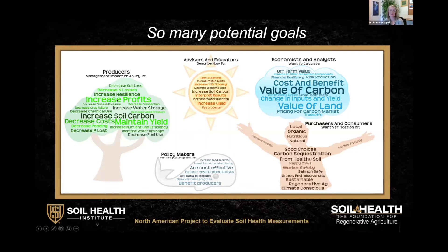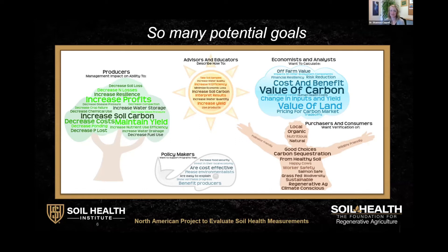We start with producers who have a range of production goals — maybe focused on economic or environmental resilience. Advisors and educators want to use information from a soil health test to help others make management decisions and build trustworthy relationships. Economists and analysts need to calculate the impact of management decisions, how that varies from place to place, and what might be effective incentive programs. Purchasers and consumers want verification that the food they're buying aligns with their value system. And finally, policy makers want evidence that they're supporting effective programs.